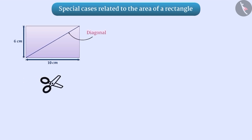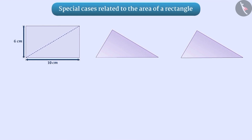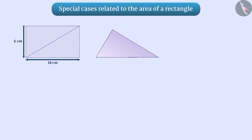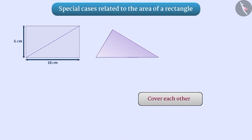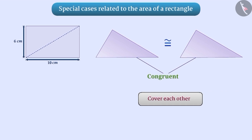Cut a rectangle along its diagonal to get two triangles. Superimpose one triangle on the other. After adjusting, you will find that they cover each other completely. Both the triangles are congruent. Since they cover each other completely and exactly, we can also say that both triangles are equal in area.